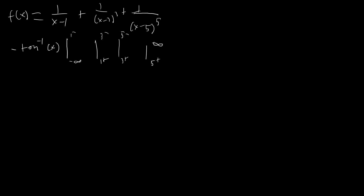I've gone ahead and made myself some space here to do all this evaluation. We're adding all these terms together — I just didn't want to write out negative inverse tangent of f of x every single time. So: at one minus, f of x goes to negative infinity, which means inverse tangent of f of x is going to be negative pi over two. At negative infinity, f of x goes to zero, so arctangent of zero is just zero. For our next evaluation at three minus and one plus: at three minus, none of the other terms matter except one over x minus three cubed, and it's going to be negative infinity — so we have another negative pi over two.